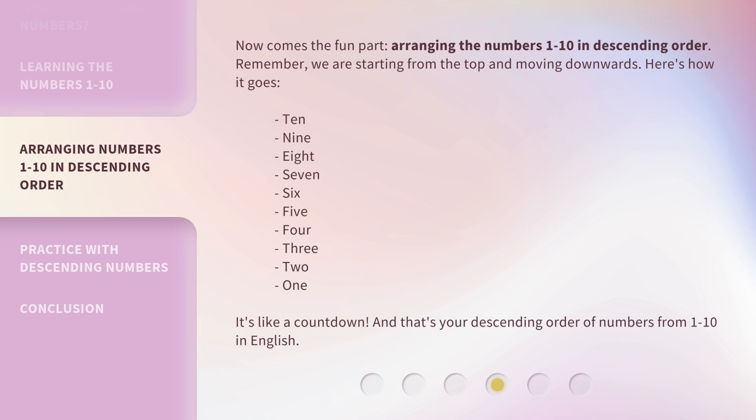Now comes the fun part — arranging the numbers 1 to 10 in descending order. Remember, we are starting from the top and moving downwards. Here's how it goes: 10, 9, 8, 7, 6, 5, 4, 3, 2, 1. It's like a countdown. And that's your descending order of numbers from 1 to 10 in English.